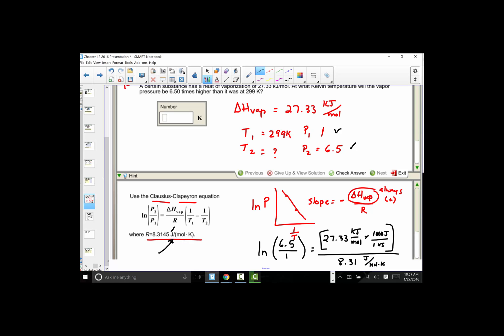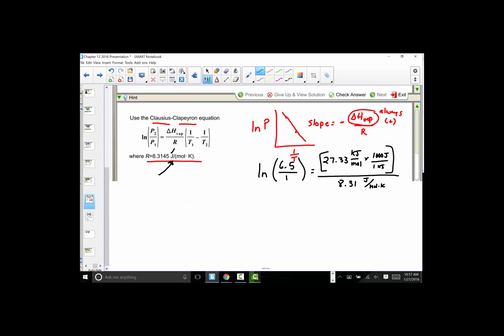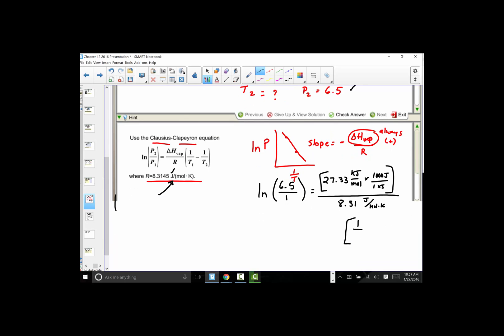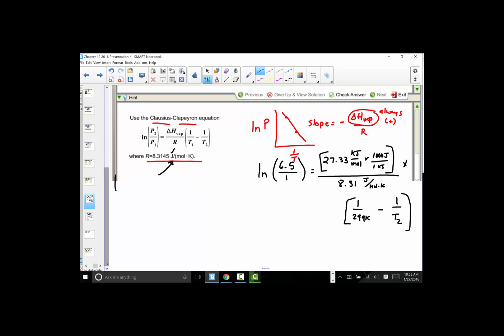The R constant is clearly given in joule per mole Kelvin, so I'm going to multiply this number by 1,000 to represent that heat of vaporization so that when I set it over 8.31 I have like units. We have the multiplication times the reciprocal of both temperatures. T1 was given to us as 299 Kelvin, and we're going to subtract that from our T2.